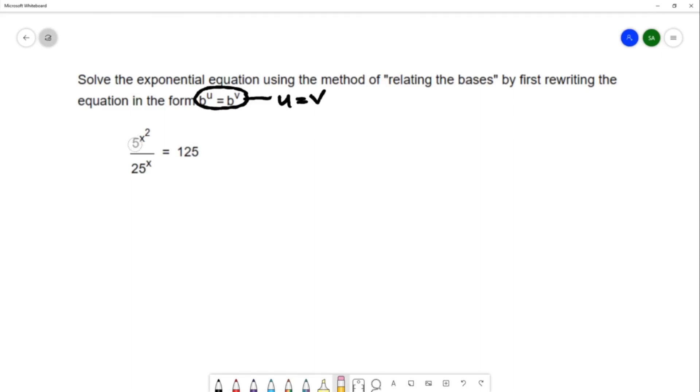5 is 5 to the first power, 25 is 5 to the second power, and 125 is 5 to the third power. So it seems like 5 would be a good base to transition to.